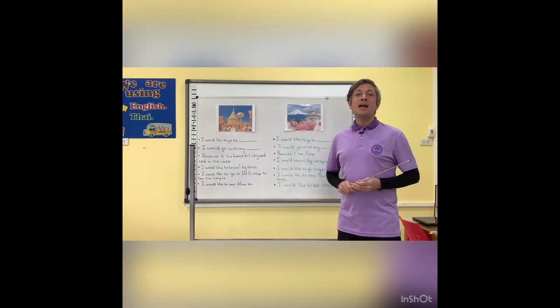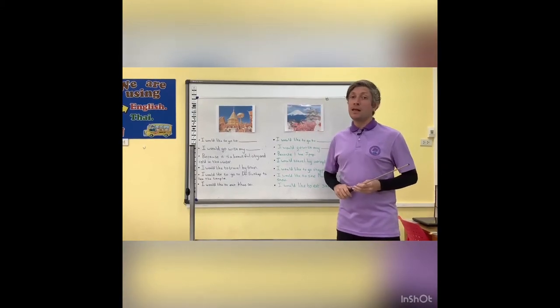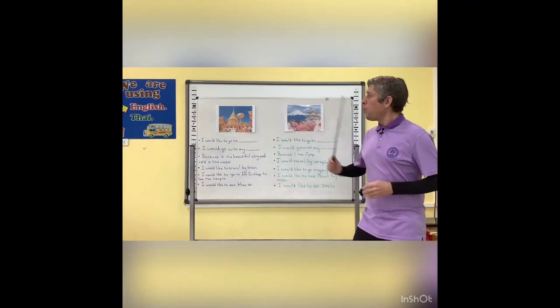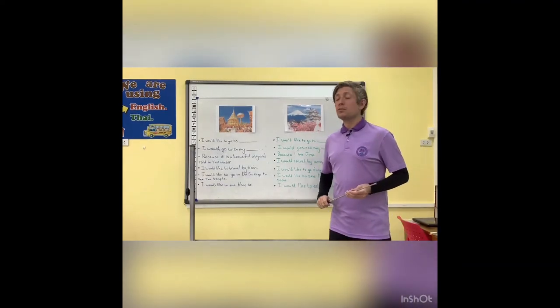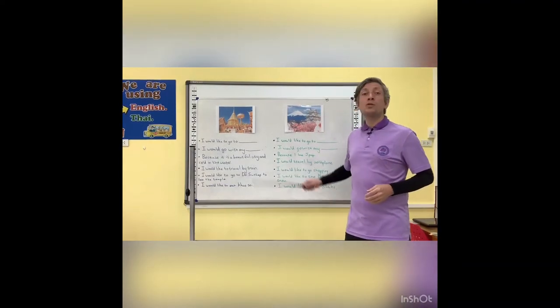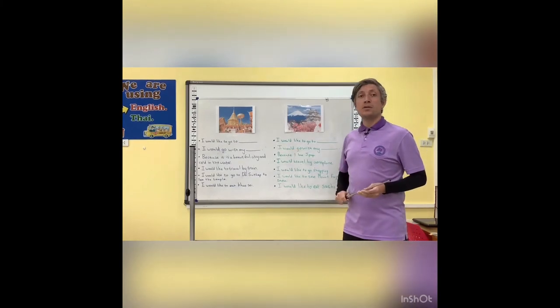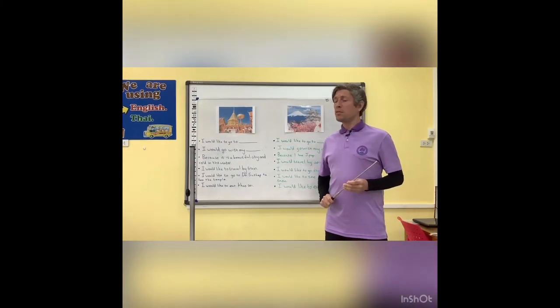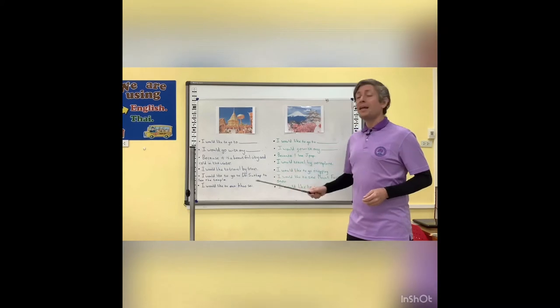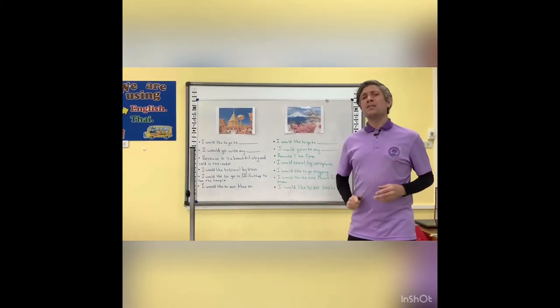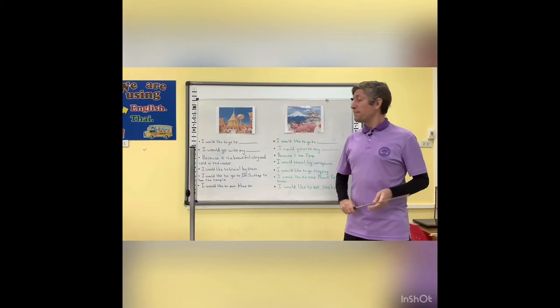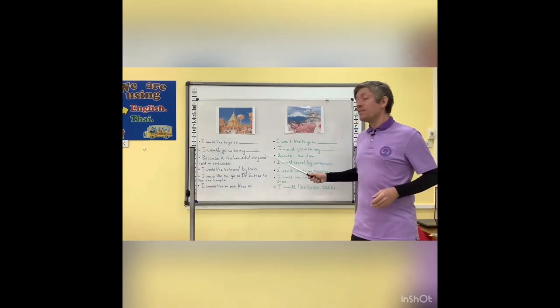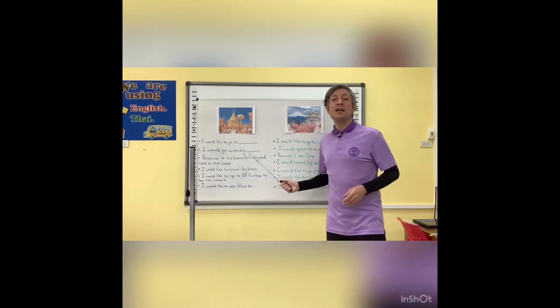Here are two examples. Example number one. Where would I like to go? I would like to go to Chiang Mai. Who would I go with? I would go with my family. Why do I want to go to Chiang Mai? Because it is a beautiful city and cold in the winter.